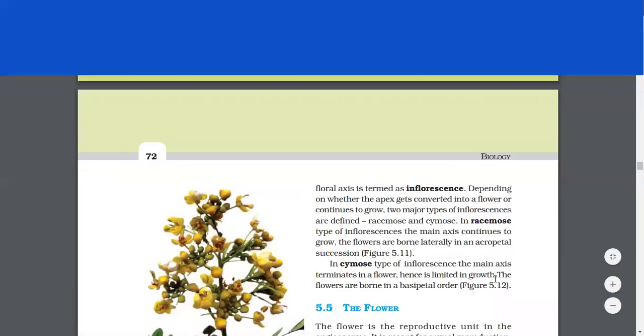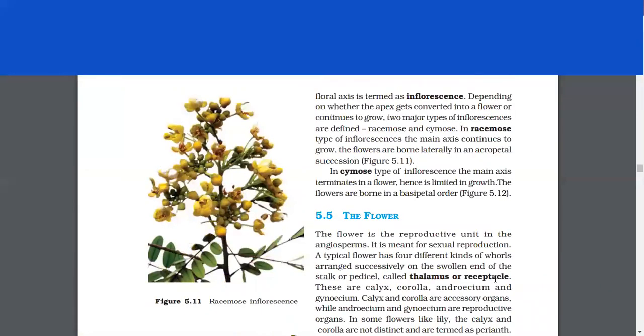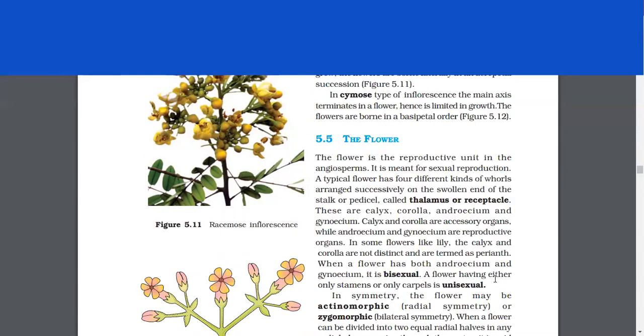Depending on whether the apex gets converted into a flower or it continues to grow, two major types of inflorescence are defined, racemose and cymose. In racemose type of inflorescence, the main axis continues to grow. The flowers are born laterally in an acropetal succession. In cymose type of inflorescence, the main axis terminates in a flower, hence is limited in growth. The flowers are born in a basipetal order.